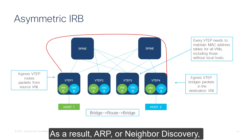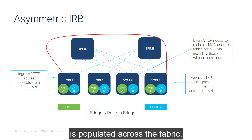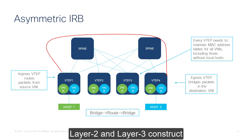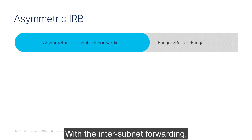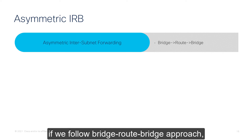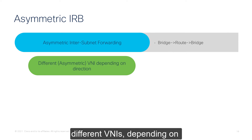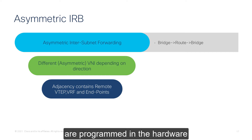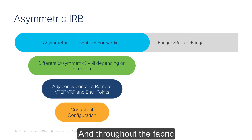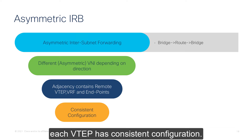As a result, ARP or Neighbor Discovery is populated across the fabric, and the configuration for the layer 2 and layer 3 constructs is consistent across the fabric. To recap: with inter-subnet forwarding we follow a bridge-route-bridge approach. Different VNIs depending on the direction of traffic are used. The adjacencies for the remote VTEP, VRF, and endpoints are programmed in hardware and the routing table. Throughout the fabric, each VTEP has consistent configuration.